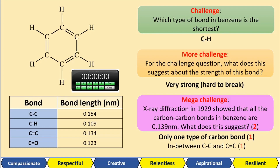This is another issue we had. We see that the bonds in benzene don't match up with the Kekulé model. So the bromine water doesn't decolorize, and now we see that there's only one type of bond between the carbons in benzene. More things are stacking up.